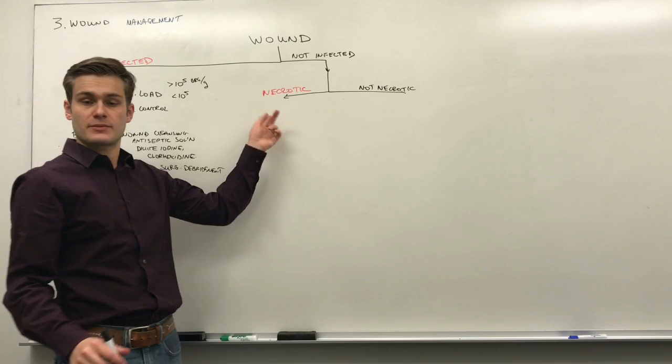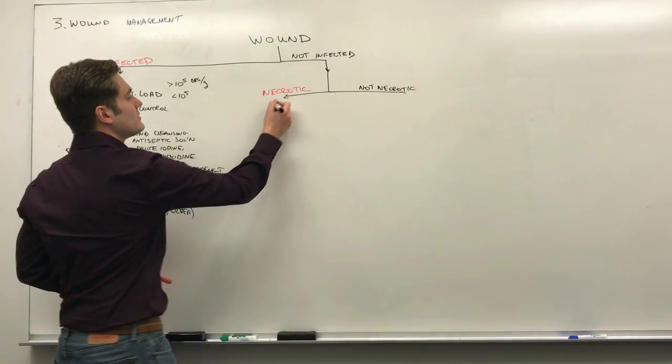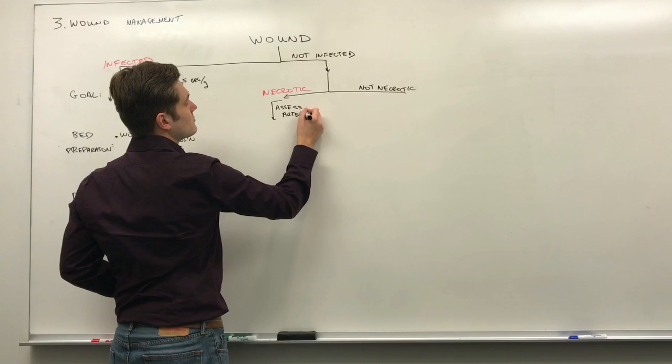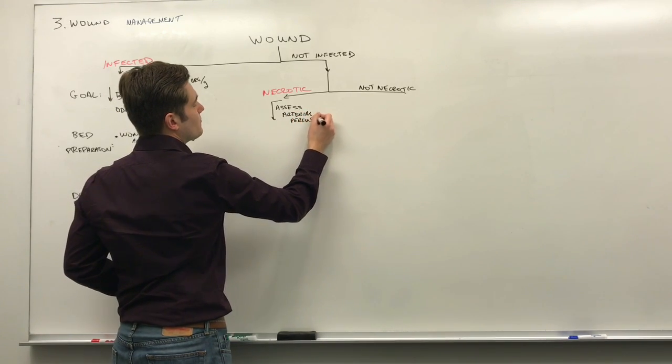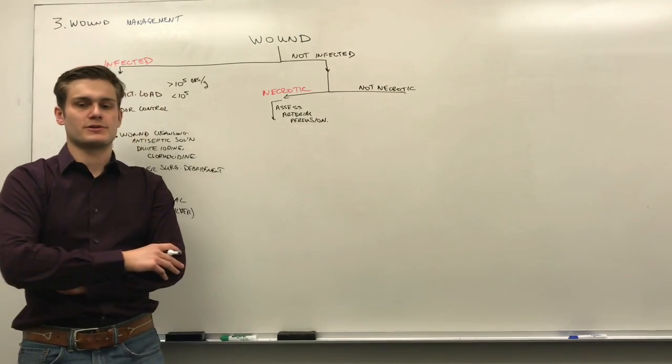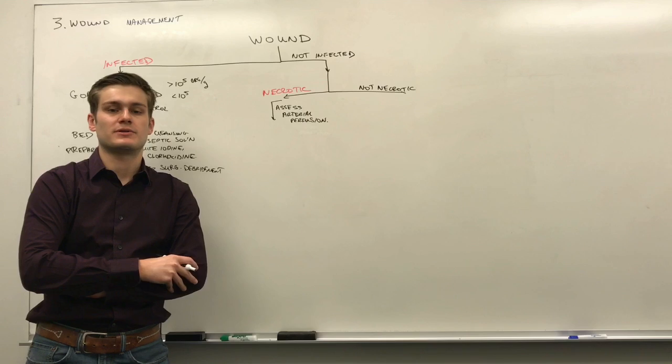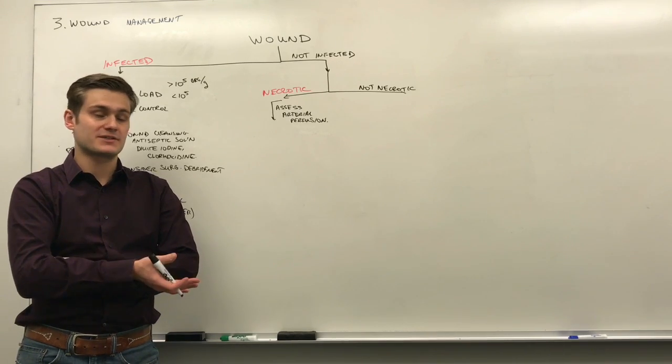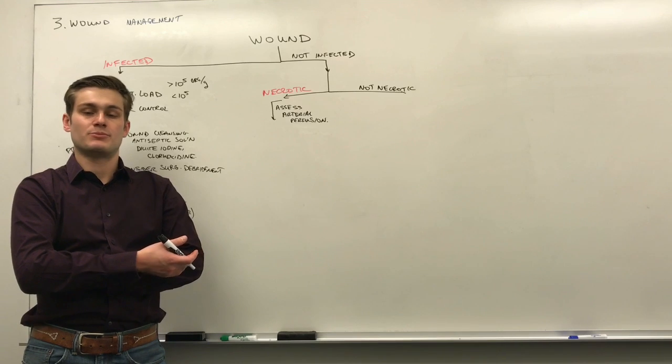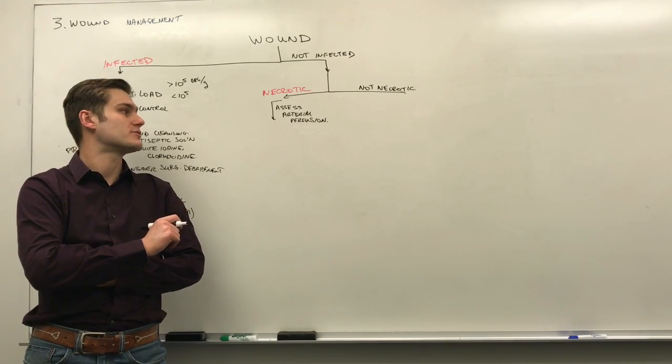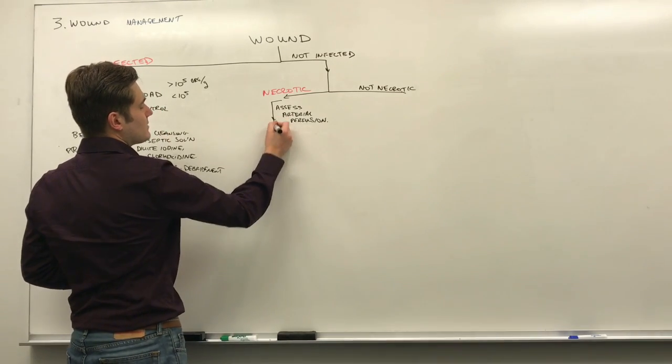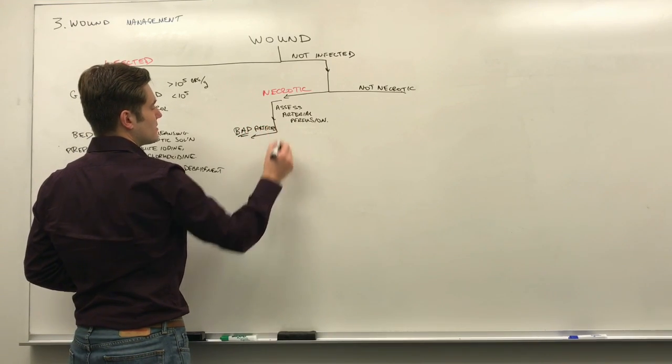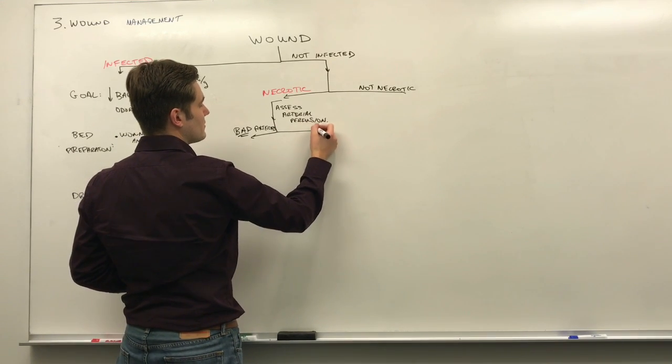The first thing that we should do if we have a necrotic wound is to assess for the arterial perfusion. This is very important because sometimes a necrotic wound can happen, it could be dry gangrene, it could be at the very tip of the toes in somebody who has very progressed peripheral vascular disease. So they completely occluded their arteries, blood is not flowing, and then they have complete death of tissue through all the toes. So, let's say, this is bad arteries, very bad perfusion. And this is okay perfusion.